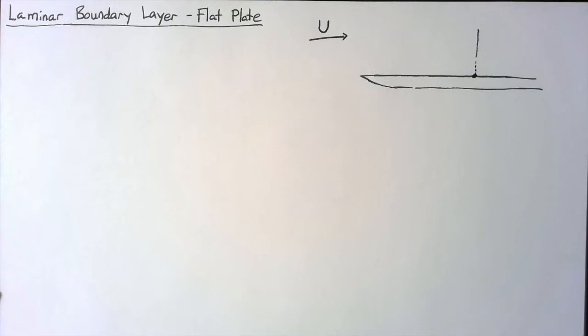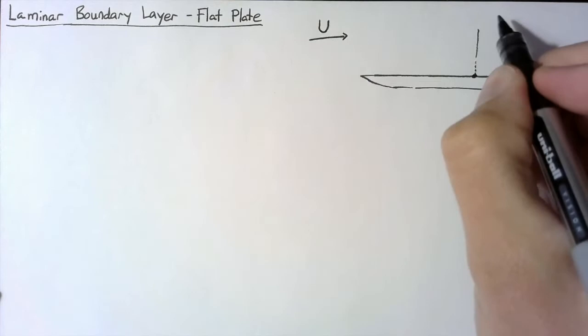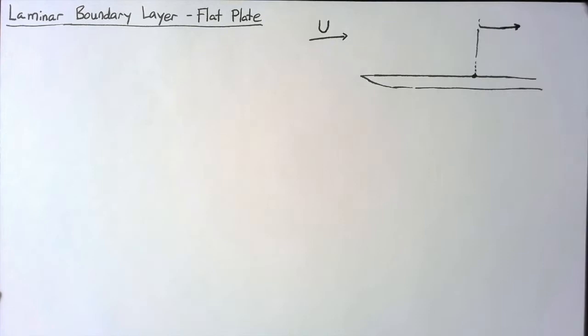So somehow we need to get from this zero up to the far field velocity, but the velocity profile that we have is not nearly as simple as what we had for pipe flow. In general, it looks something like this — we have a straight line at the beginning, but then it starts to curve towards our far field velocity.